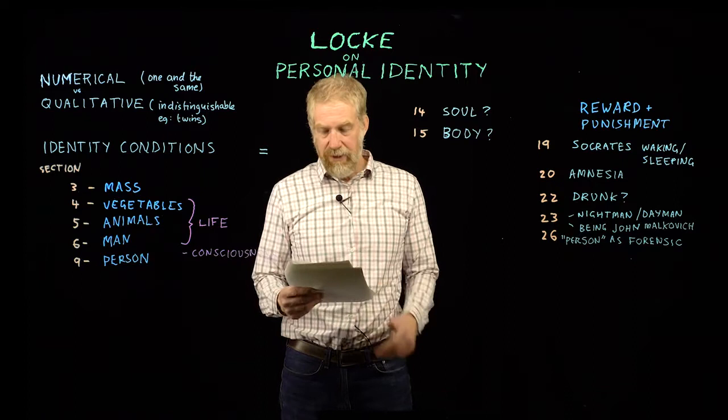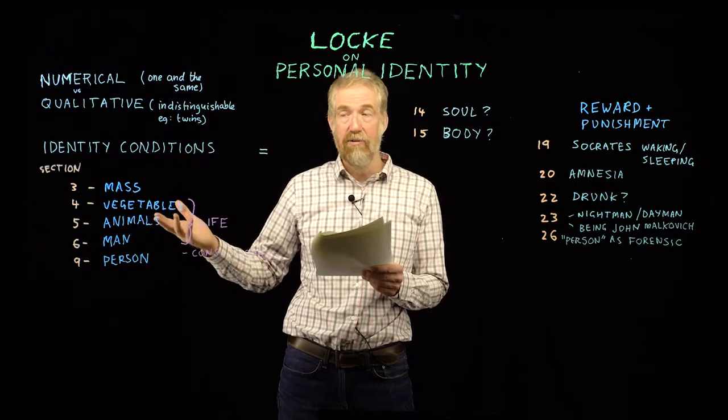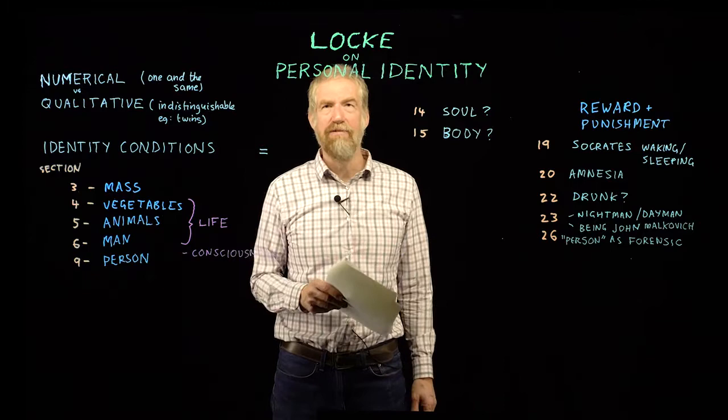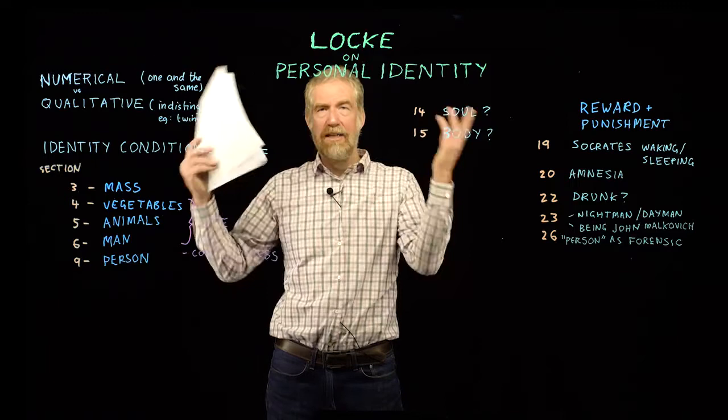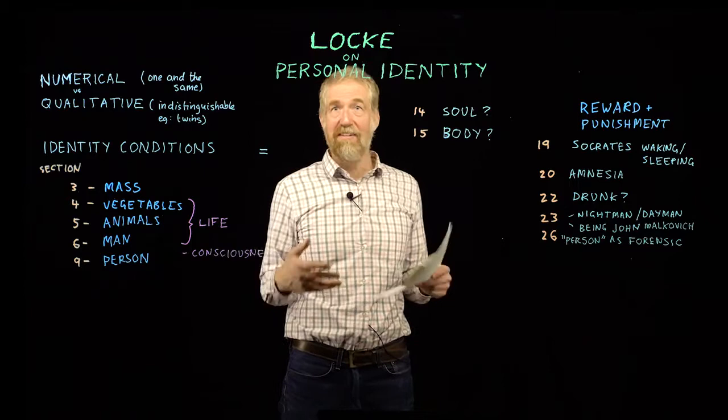We get to man in section 6. He says: 'This also shows wherein the identity of the same man consists - that is nothing but a participation in the same continued life by constantly fleeting particles of matter.' Locke already knew that we add and lose atoms constantly. Somebody once described a living thing as a slow-motion fountain - a fountain takes in water and ejects water out the top; we take in atoms and eject atoms when we're done with them. Think of yourself not as a stable thing, but as a slow-motion fountain.